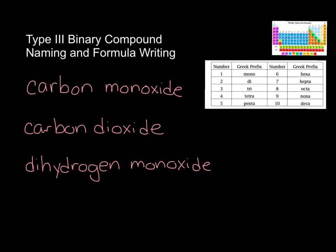We'll start with carbon monoxide. The first element — if there's only one of that atom in the formula — you just state the element's name. Carbon tells us there's only one, so we just write C. The prefix for the second element tells us how many of the second we have. Monoxide means I only have one oxygen. Therefore, carbon monoxide is simply CO.